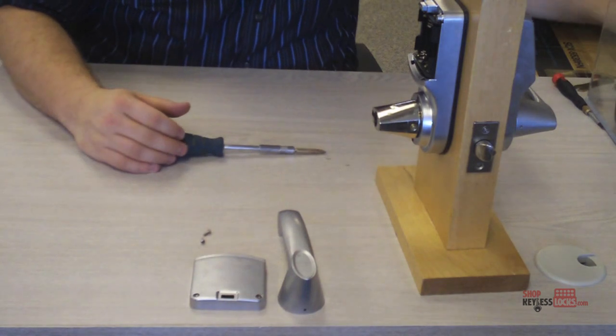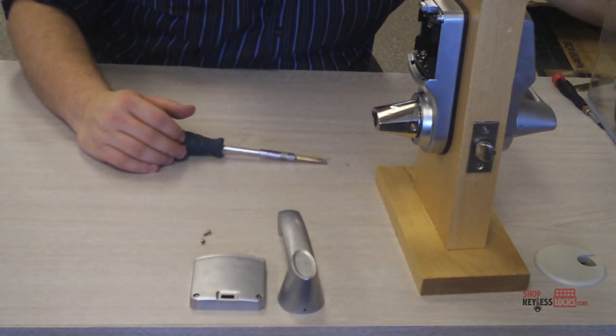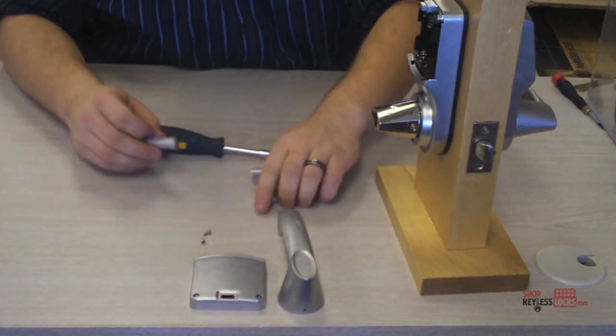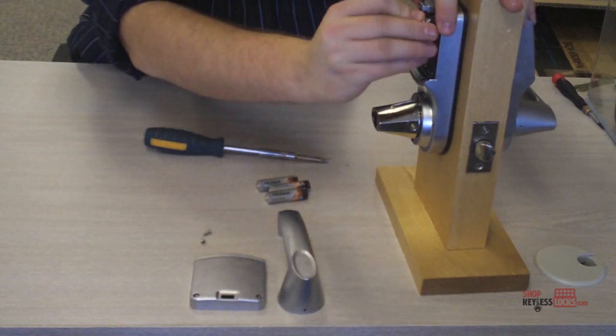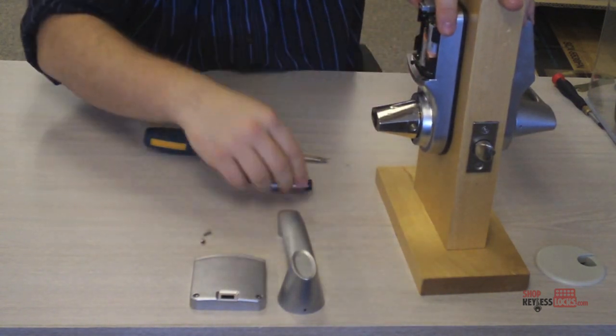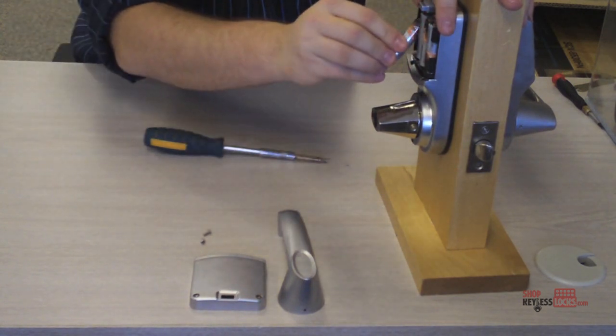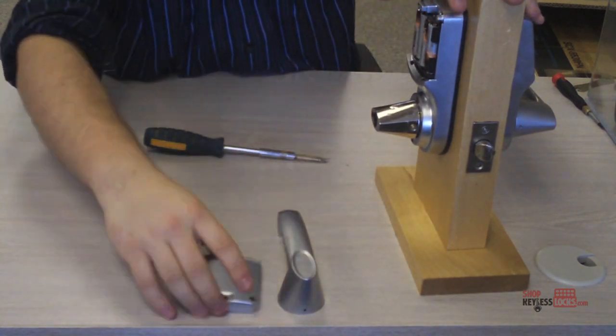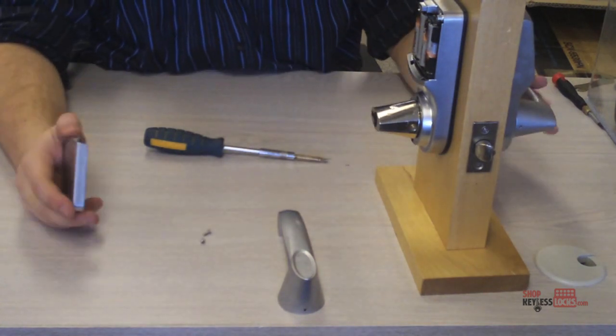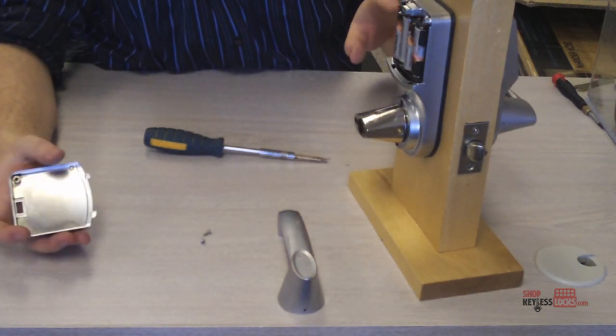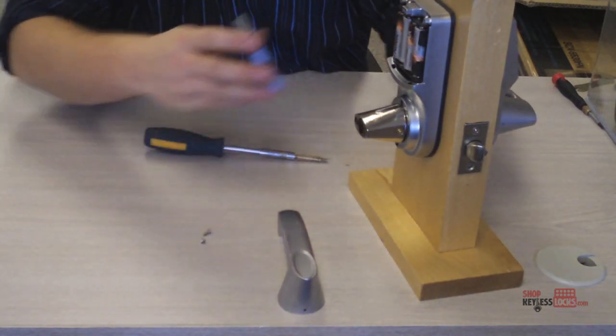There we go. Now the next step is to put the batteries in the lock. Then you'll notice the lock beep, that just shows you that the wires are connected and the power is getting to the front of the lock.